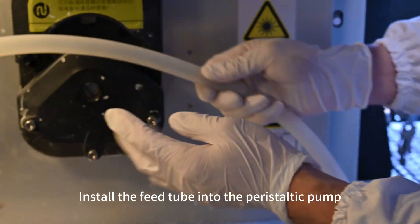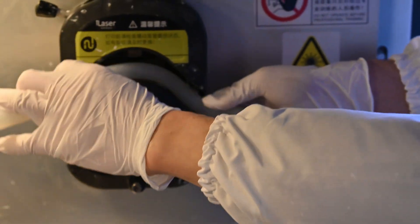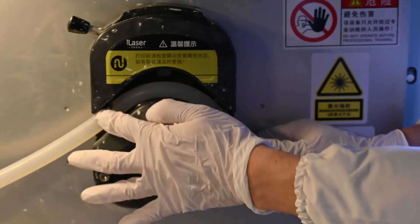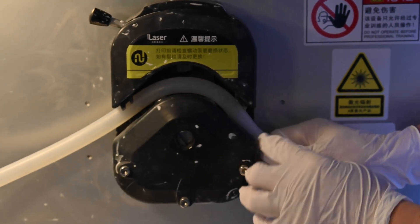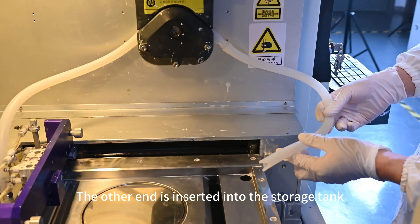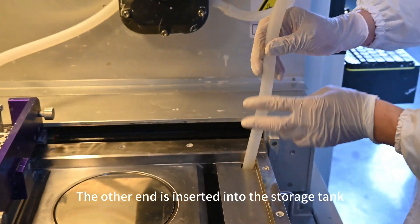Install the feed tube into the peristaltic pump. The other end is inserted into the storage tank.